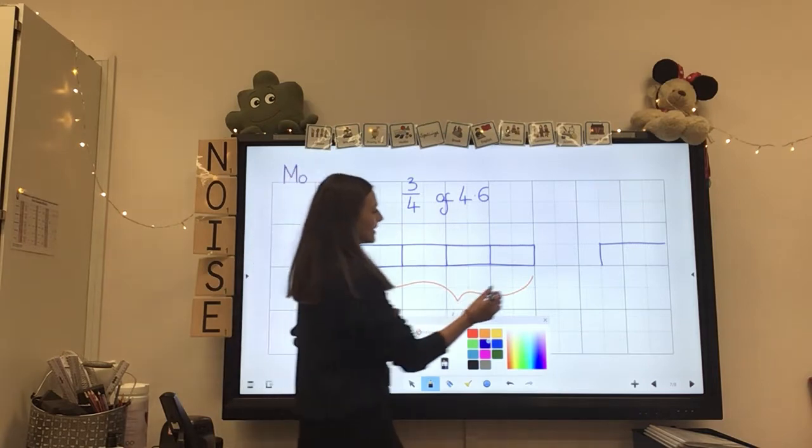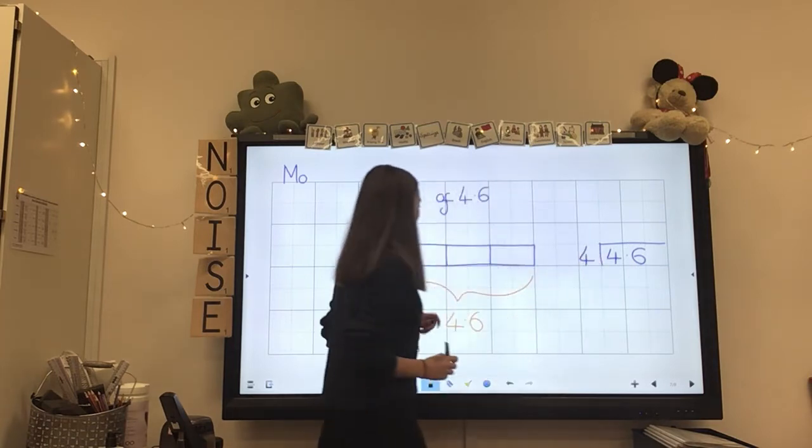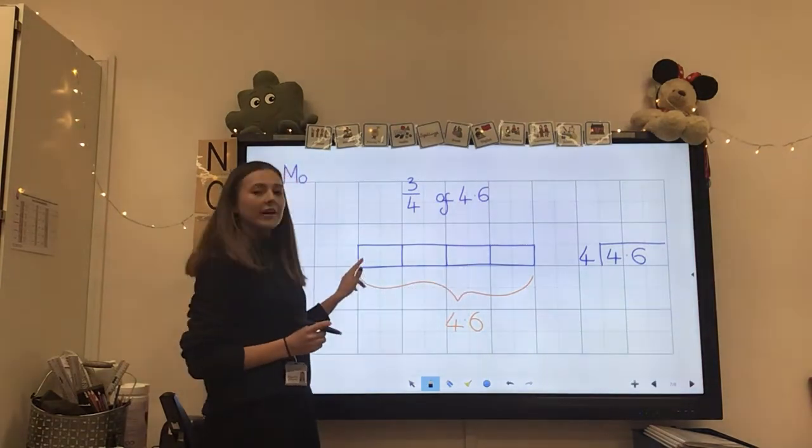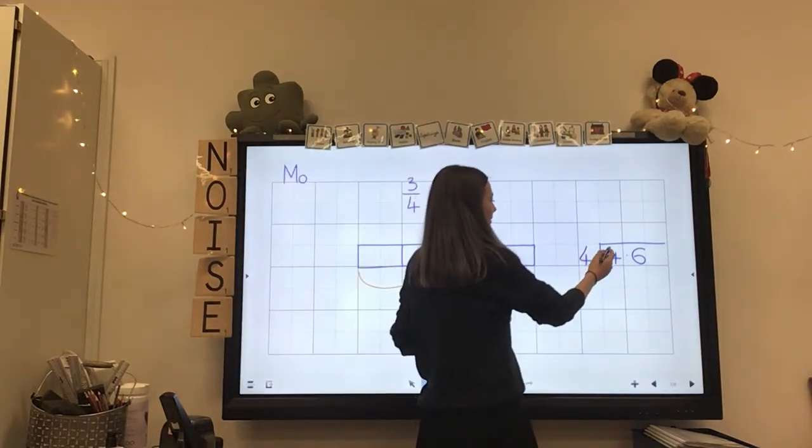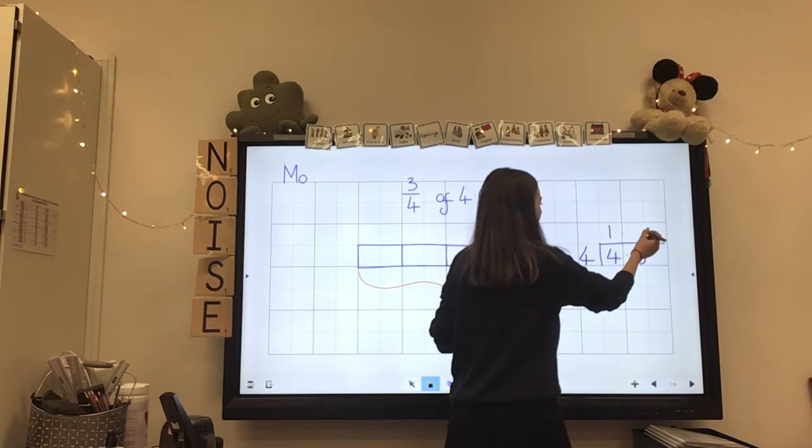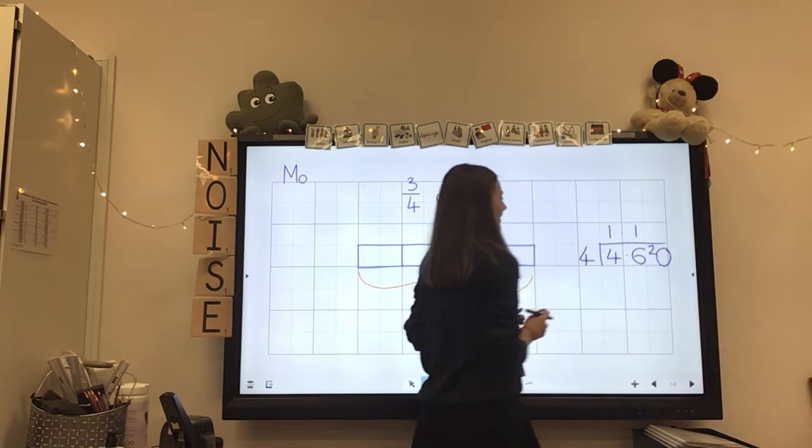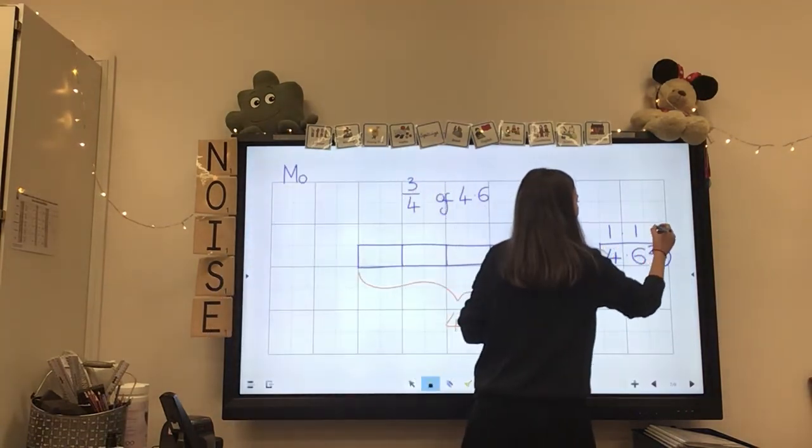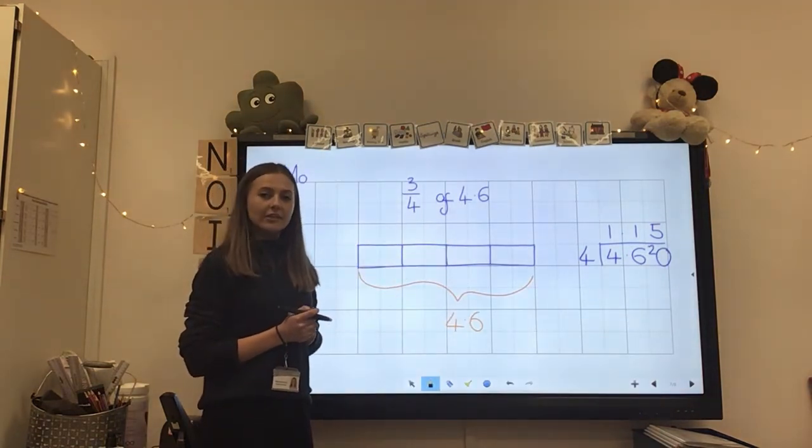Okay, so what can I do to 4.6 to work out what one of those sections of that bar represents? So what we can do is we can take 4.6 and divide that by four, because we have four sections. Okay, so we already know what four sections is, and we're trying to work out what one is. So 4.6 divided by four. So we know that four goes into four once. How many times does four go into six? It goes in once. And then we have two left over. So I'm going to have to add a zero in there. Okay. How many times does four go into 20? That's right, five. So we now know that one of our sections of our bar is equal to 1.15.